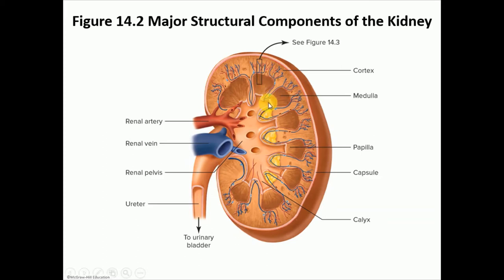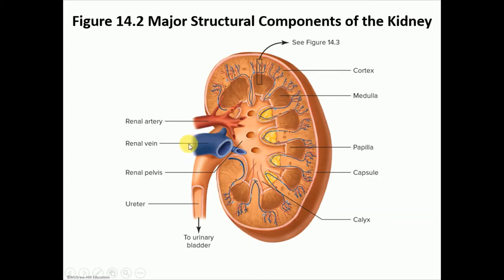The minor calyces gather together to make a major calyx, then a funnel-shaped part known as the renal pelvis, and then urine goes down the ureter to reach the urinary bladder. The tubules are found in both the cortex and the medulla. The hilum is where things go in or out of the organ — the renal artery enters, while the renal vein and ureter exit.